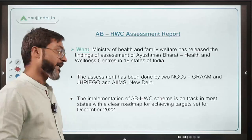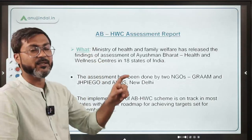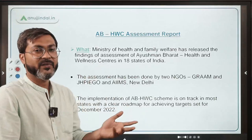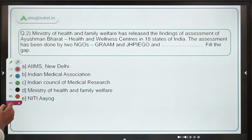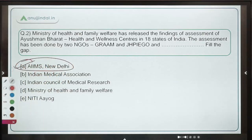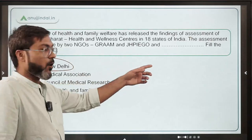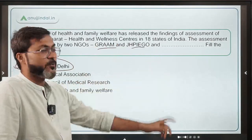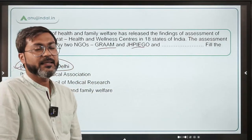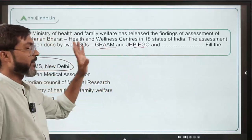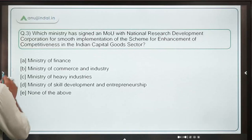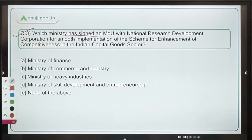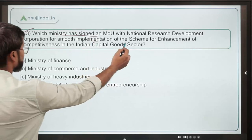You can also make use of these points while writing an answer on any question based on health. The correct answer is Option A — AIIMS New Delhi — because that is the organization which, along with GRAM and JHP Go, conducted the assessment of this particular scheme.